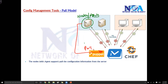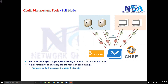In the pull model, the server is not going to initiate the connection. The connection is initiated from the node — from the agent, because the agent software is installed on that particular node. That agent software must be installed on each and every node.